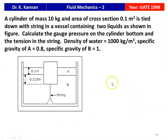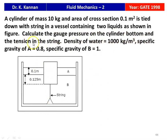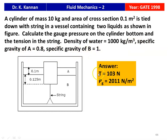The next question from the 1998 question paper: a cylinder of mass 10 kg and area of cross section 0.1 m² is tied down with a string in a vessel containing two liquids. Fluid A has height 0.1 m and specific gravity 0.8; fluid B has height 0.125 m and specific gravity 1.0 (water). Calculate the gauge pressure at the cylinder bottom and the tension in the string. The answers are: tension equals 103 Newton and gauge pressure at the bottom equals 2011 N/m².